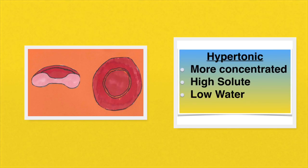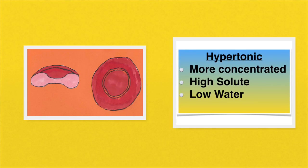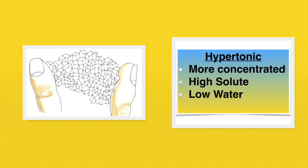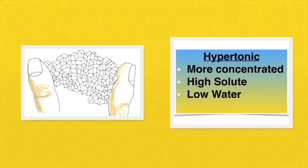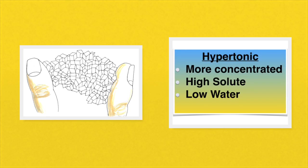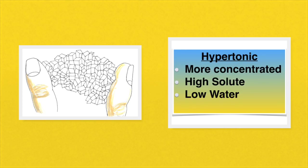Let's take some body cells, some red blood cells, and we're going to bathe them in a hypertonic solution. Bathing those red blood cells, or any of your body cells for that matter, in a hypertonic solution means it's a solution that contains high solutes, low water.